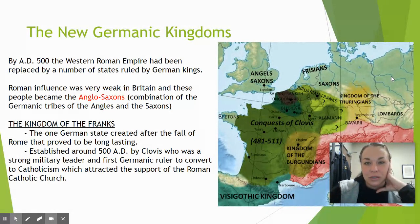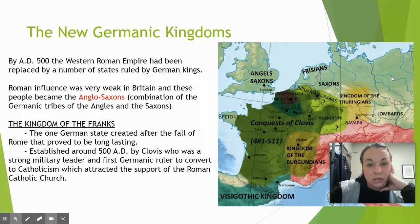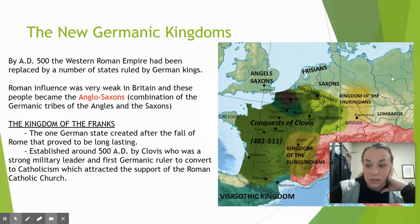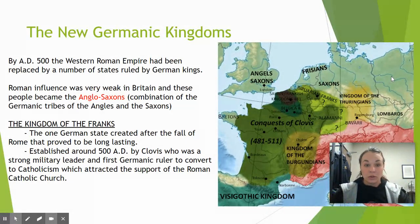Clovis is going to create a pretty large kingdom for himself, but he's also going to convert to Catholicism, which is huge. As we talked about, the Pope is going to fill that power vacuum within the city of Rome when it falls, and the Pope becomes not just a religious leader but a political leader. As you start to see these Germanic tribes and their leaders convert to Catholicism, the Pope is going to take on an even bigger role in society throughout Europe, because these kings are obviously going to him for advice as new Christians.